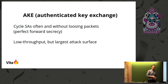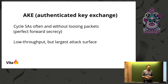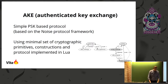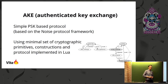There's also the issue of authenticated key exchange. We didn't want to do IKE — authenticated key exchange is the tricky bit of the whole thing. You want to cycle security associations often without losing packets, to be able to provide strong forward secrecy. While it's a low-throughput part of the system, it's quite complex and provides the biggest attack surface — check out the IKE RFC, it's huge. I ended up with a simple pre-shared key based protocol based on the Noise protocol framework, which I can really recommend — it's modern and clean if you need cryptographic key exchange TLS-like functionality.